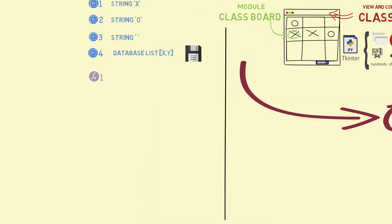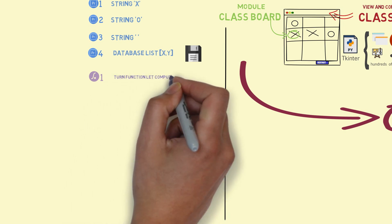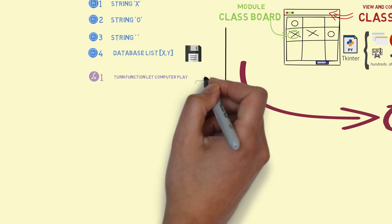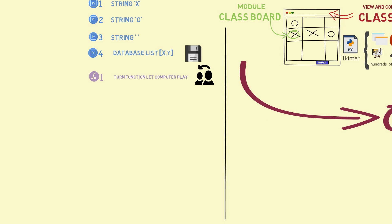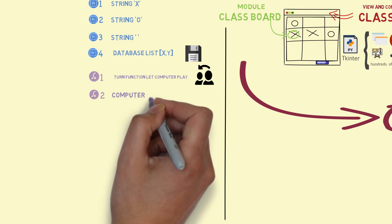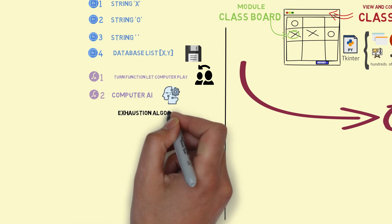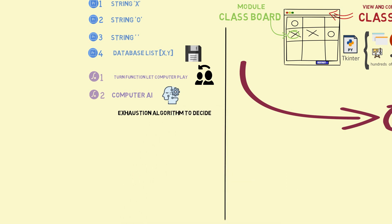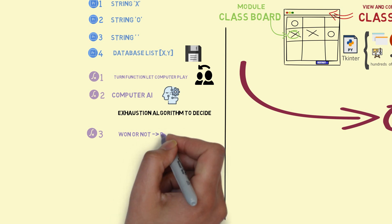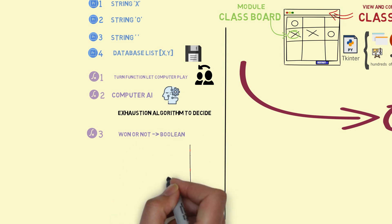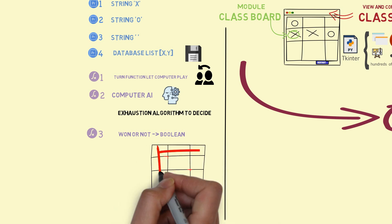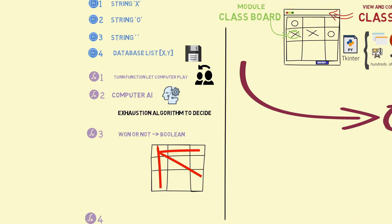For the functionality of the class board, we need a turn function to let the computer play. After the player clicks any button, it should be turned to the computer to play the game. Function number two is a computer AI function to let the computer think — which one is the best play after the player's play. We use the exhaustion algorithm to decide the computer's play. Function number three is a boolean function, win or not, by outputting a boolean parameter after each play, to judge win or not horizontally, vertically, and diagonally. A tie or not function is also needed in the end.